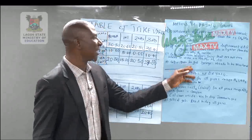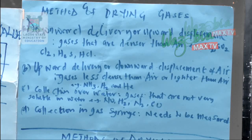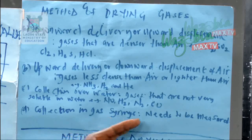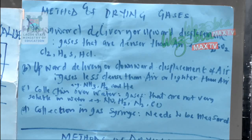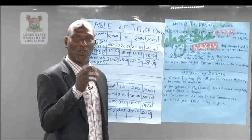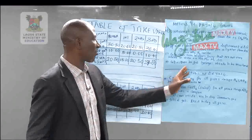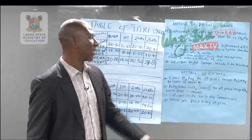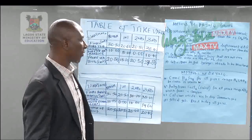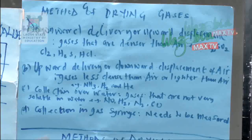Then there is collection in a gas syringe. We collect gas in a gas syringe when a specific volume is needed. The gas is measured — for example, if you need 5 mL, 10 mL, or 20 mL. That is where we collect it using a gas syringe.